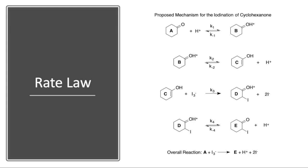In the pre-lab, you should have written out hypothetical rate laws for this reaction mechanism, assuming that different steps were the rate-limiting step. We know that the experimentally determined rate law should match the rate law for the rate-limiting step. So we're going to compare our experimental data to those hypothetical rate laws from the pre-lab to determine which step is rate-limiting and justify that with our experimental data.